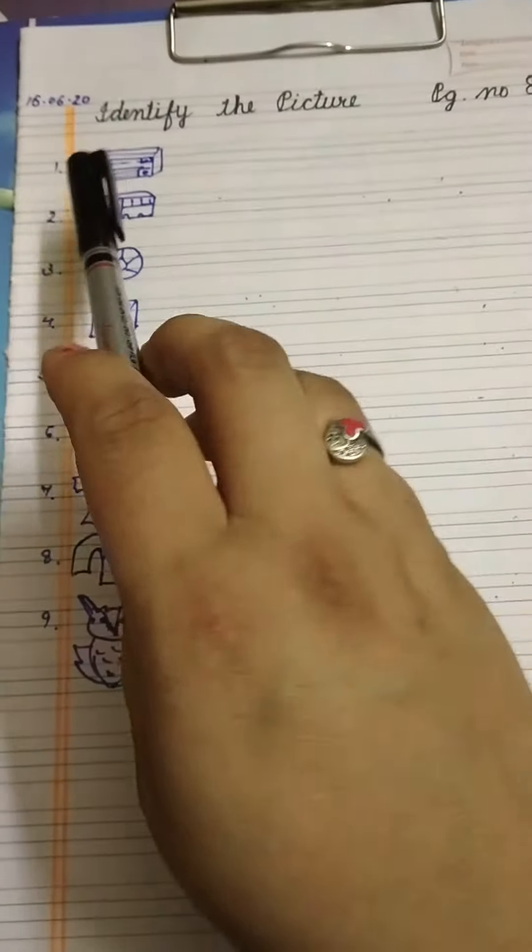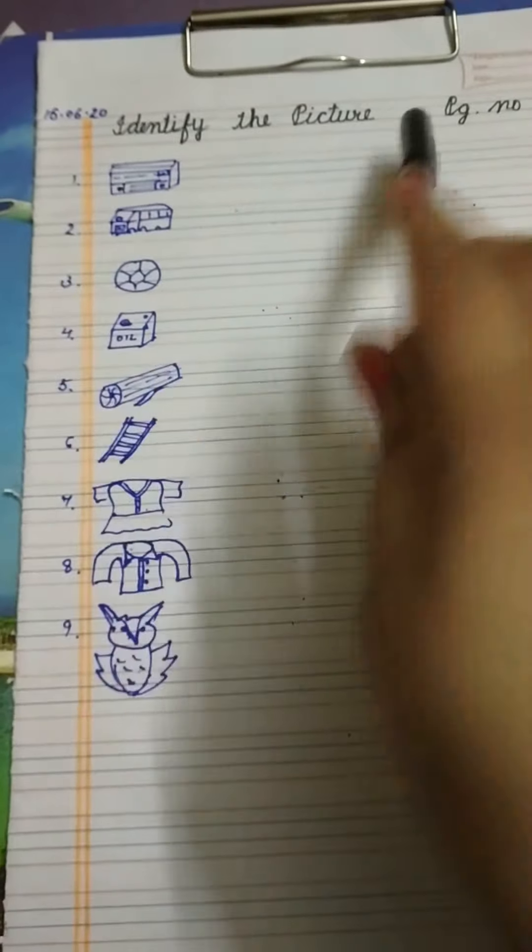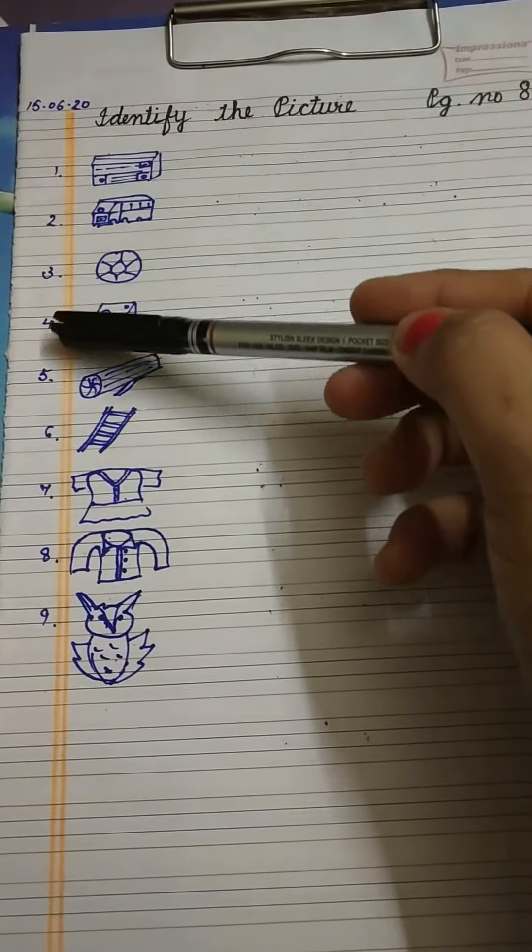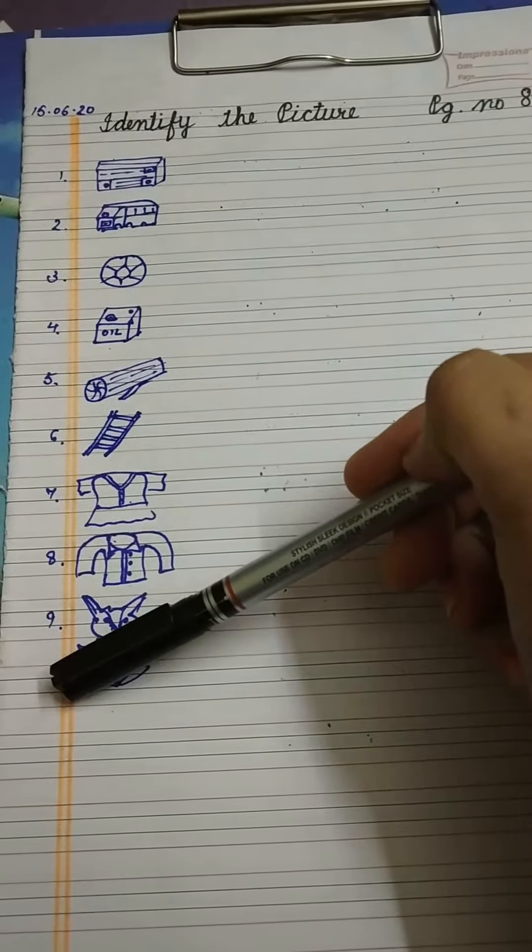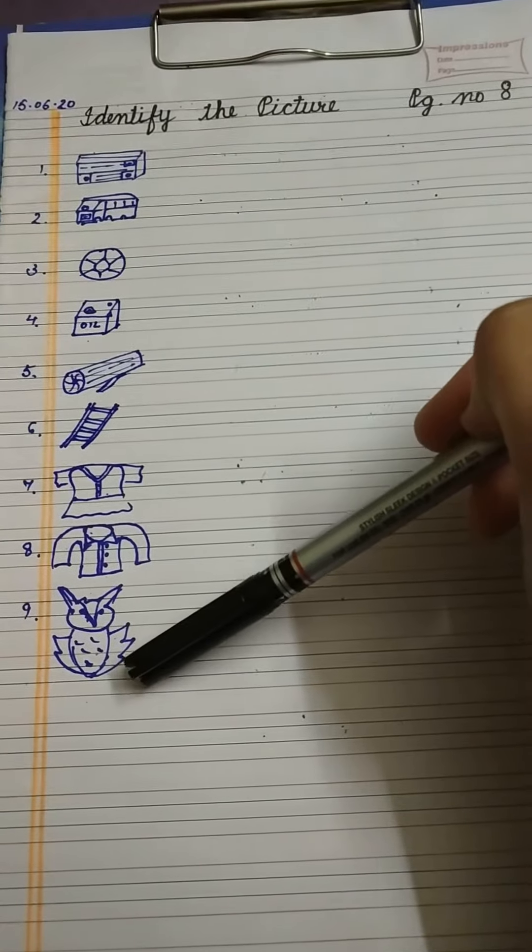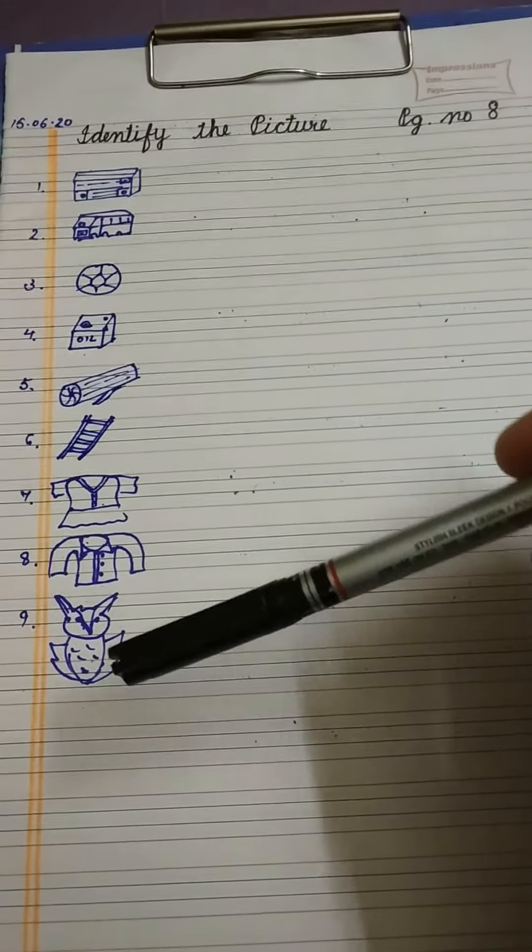You have to write down the date and the topic 'identify the picture', then write the number at the left side of the margin. Then you have to draw the same pictures as I have drawn here.